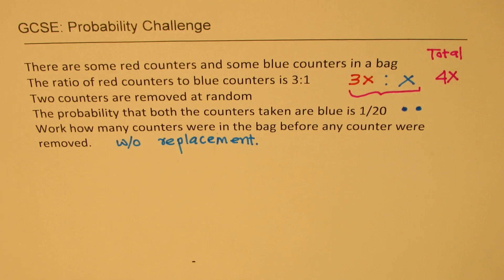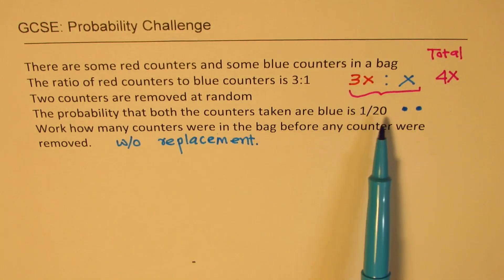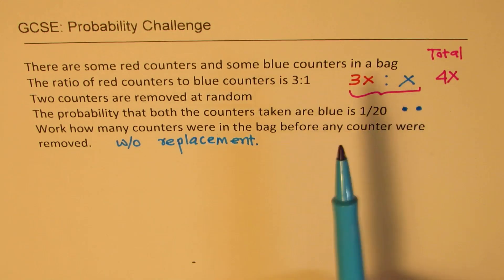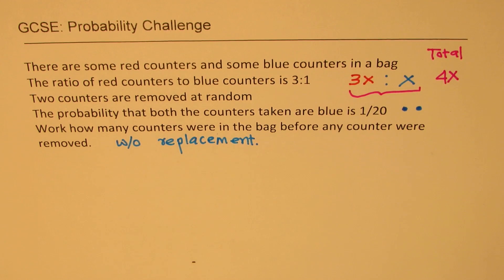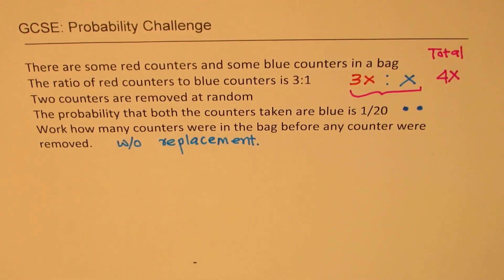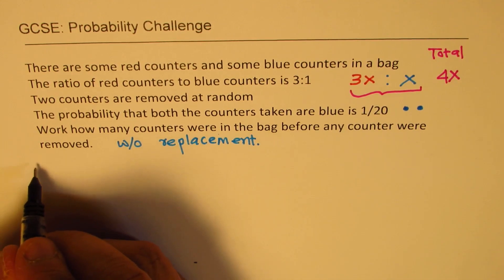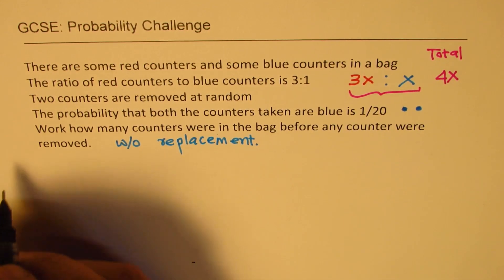So without replacement means that for the first time when you are taking out, you have x blues. Now if you have already withdrawn 1, 1 less is left. Now it says work how many counters were in the bag before. So you need to find the total sum were there before you remove them. So I hope now the question is absolutely clear.